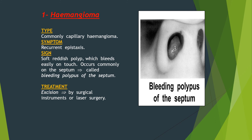Hemangiomas: the type is usually a capillary hemangioma and the patient complains of recurrent epistaxis. By examination, you will see a soft reddish polyp which bleeds easily when touched. It occurs commonly on the septum and is called the bleeding polypus of the septum. It is treated by excision with surgical instruments or laser.